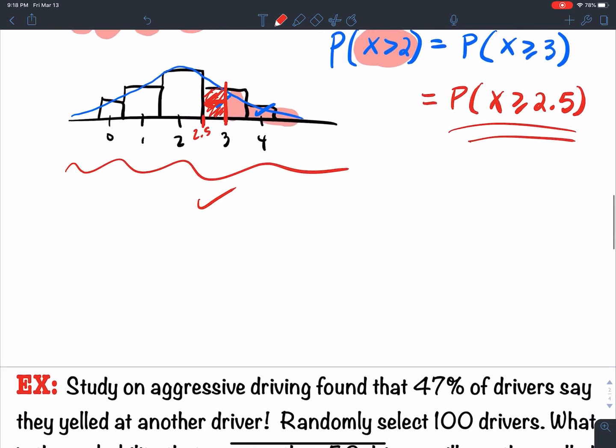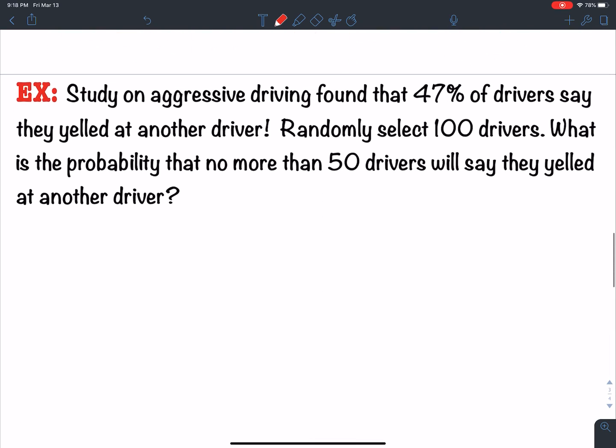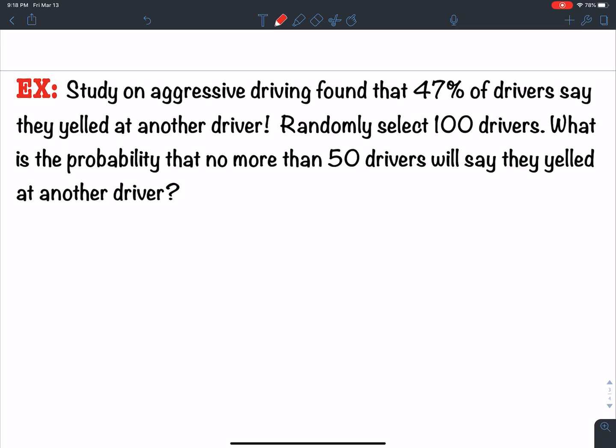So I've got one example and this will end it for 5.5. And this example is a word problem. A study on aggressive driving found that 47% of drivers say they yelled at another driver. Randomly select 100 drivers. What is the probability that no more than 50 drivers will say they yelled at another driver? Now, we're going to work this one in a different video.